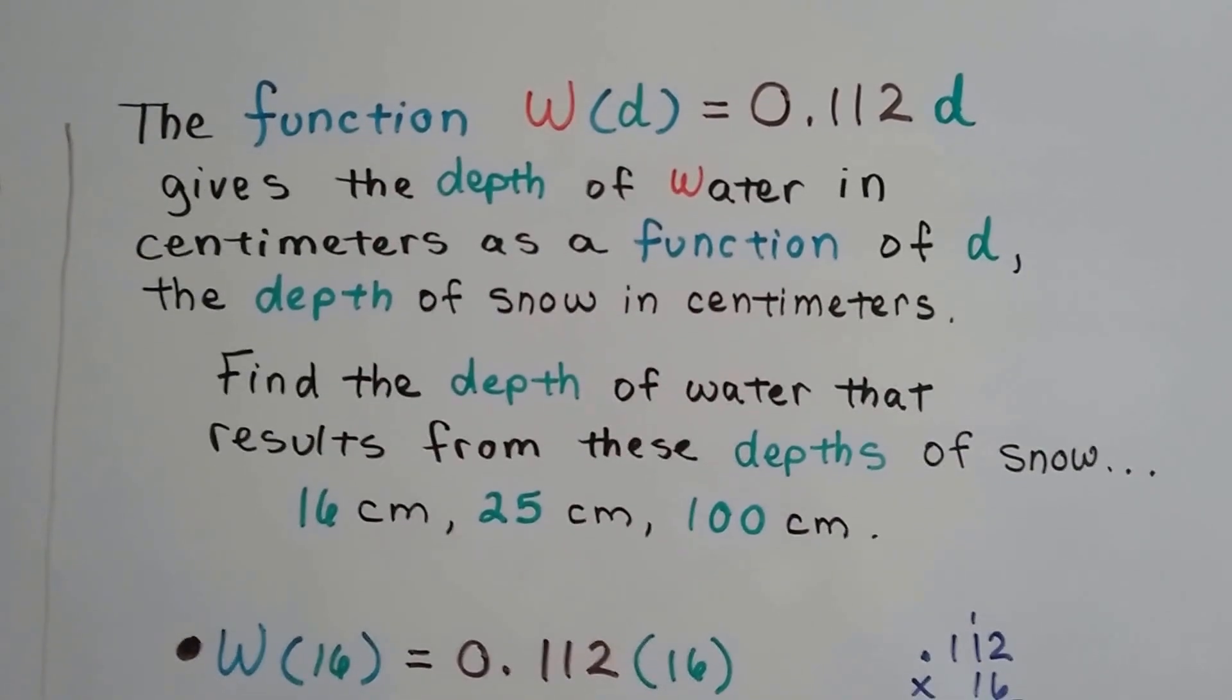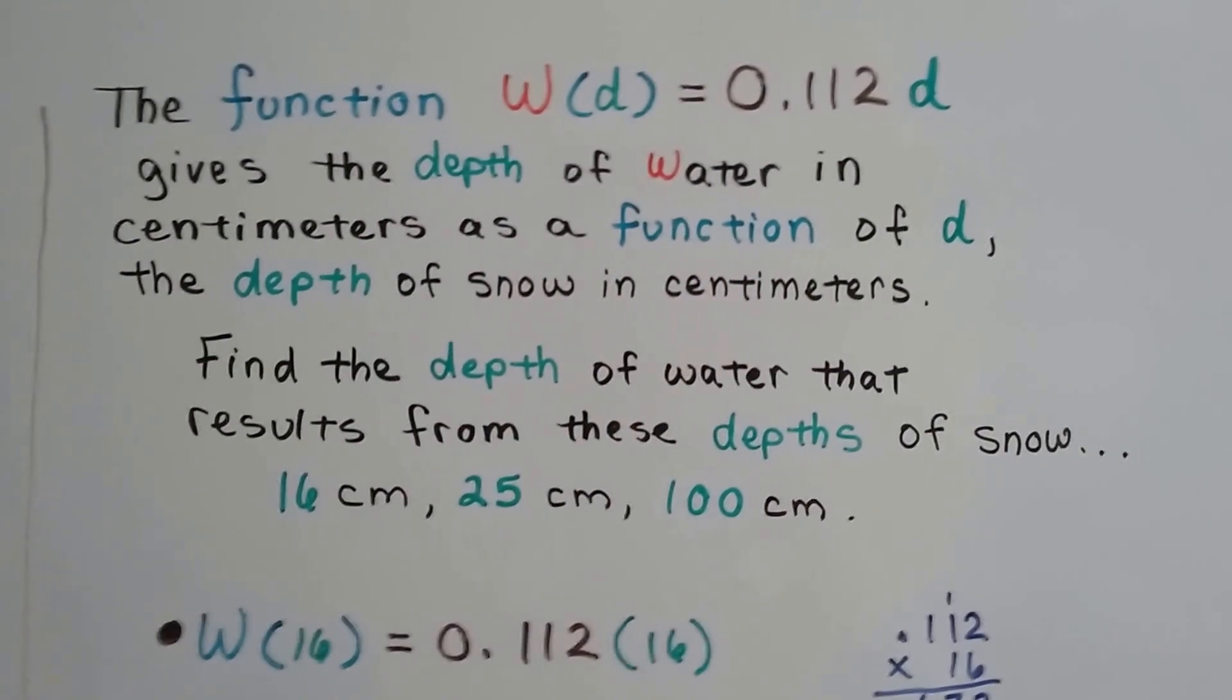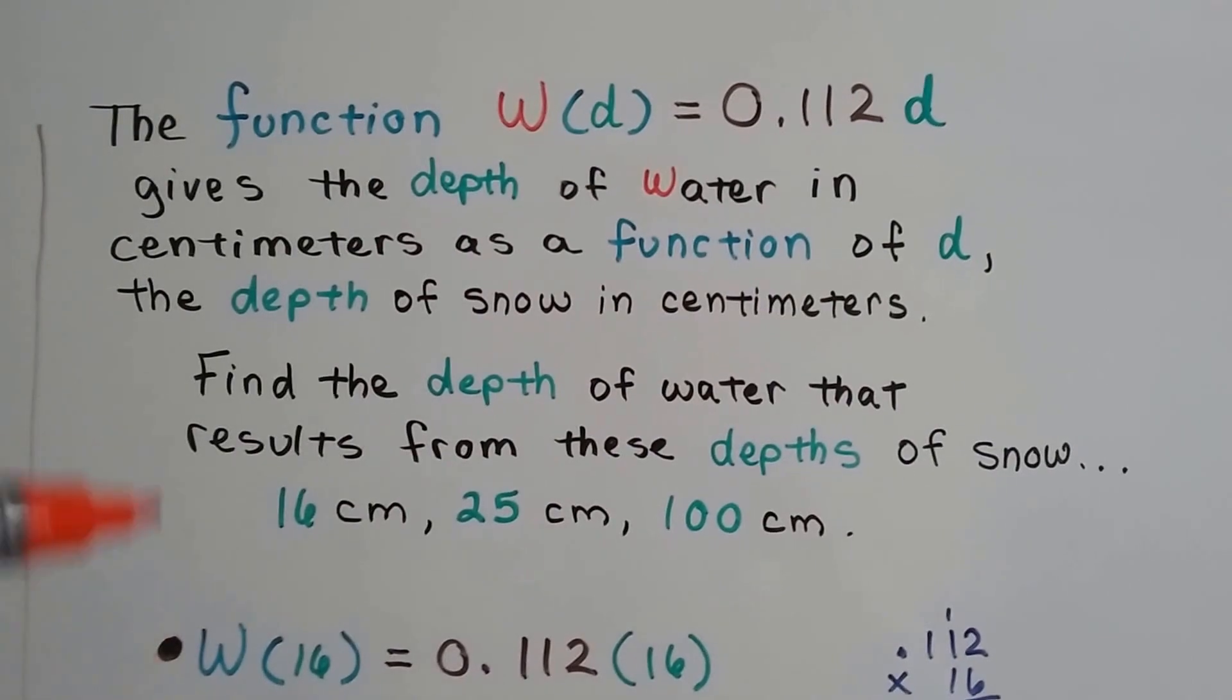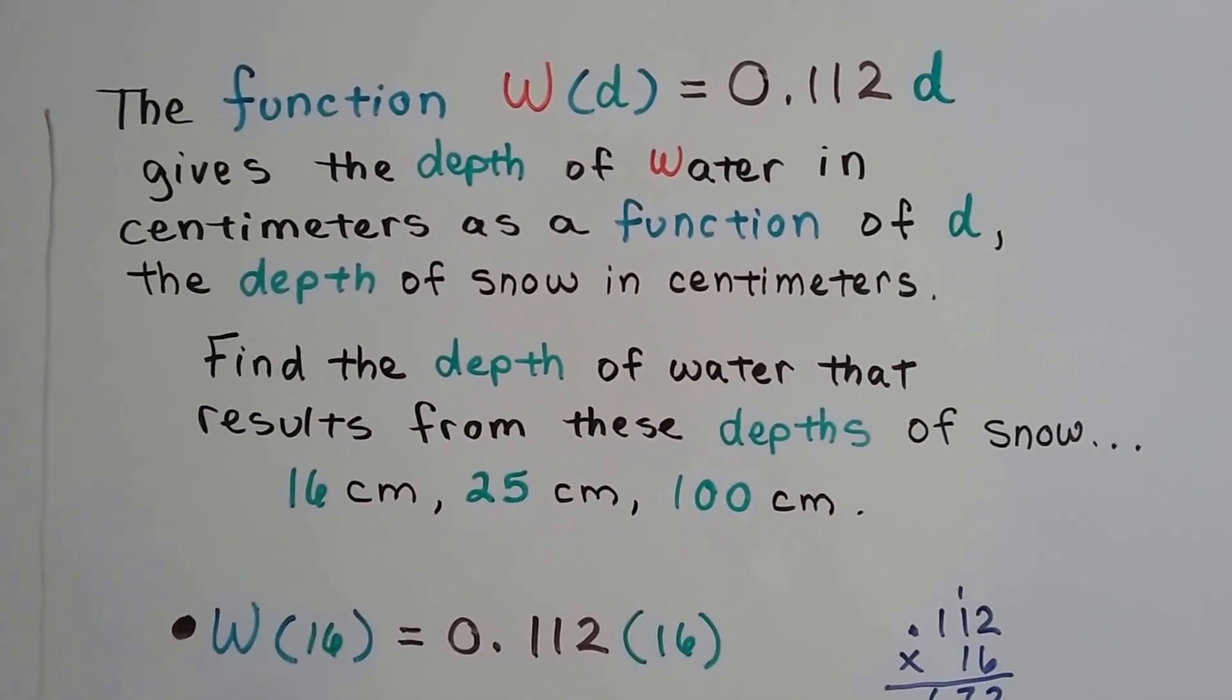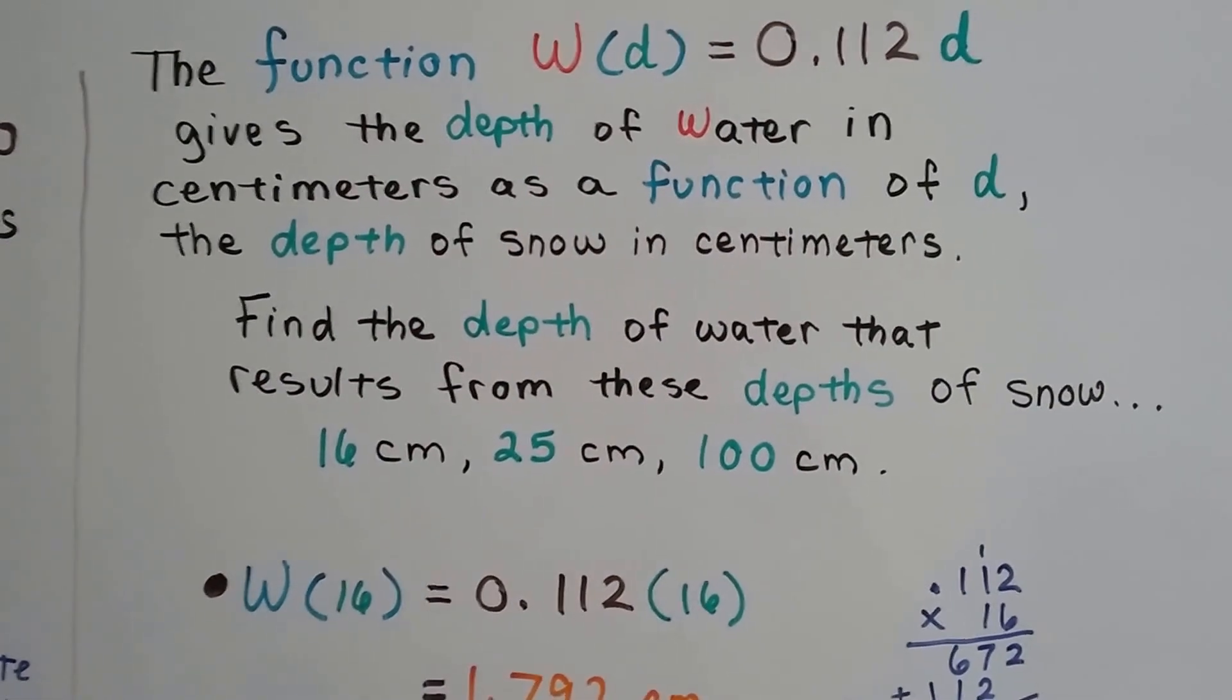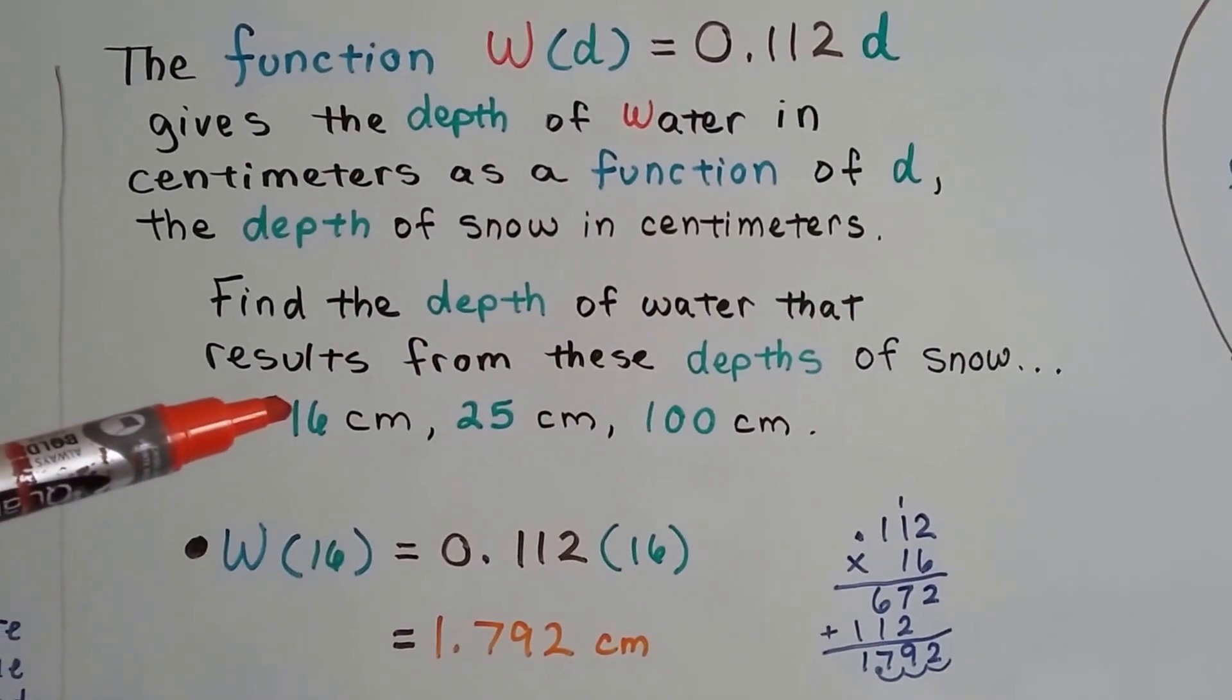Find the depth of water that results from these depths of snow. Because snow is fluffier, right? When it melts, it has a different water depth than when it was snow. When it was snow, it was fluffy and taller. When it became water, it became lower.